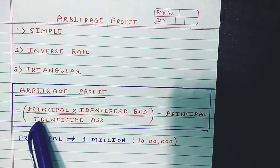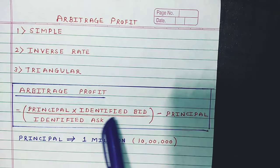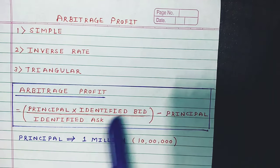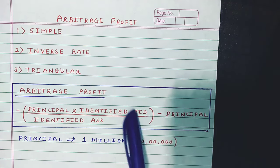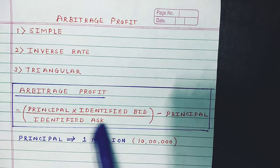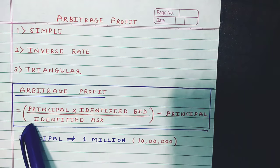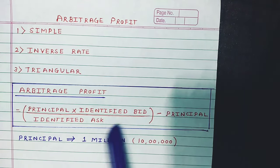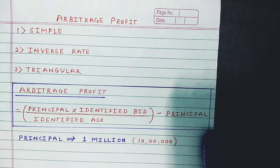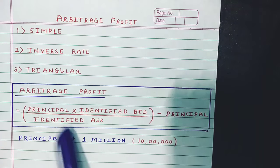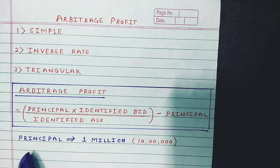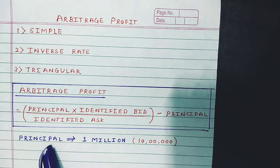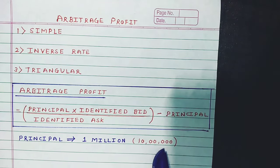The formula is: Principle × Identified Bid — please pay attention, it is not just a bid, it is an identified bid — this whole divided by Identified Ask, minus Principle. Always in computation of Arbitrage, we have to assume a principle amount of 1 million. 1 million means 10 lakhs.